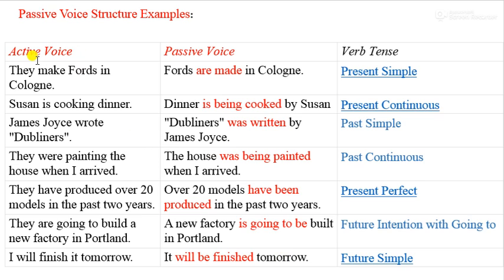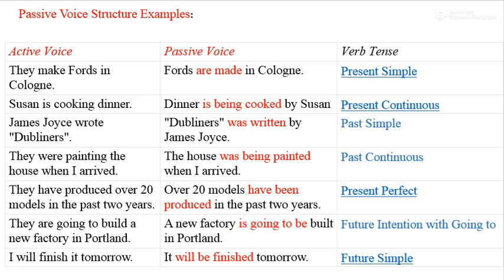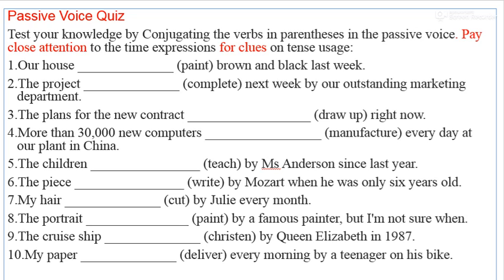In the active voice there is subject, then verb, then object. In passive voice the object comes first, then the verb form. The key point of passive voice is to place focus on the object rather than the subject — what was done to something, or focusing on the person or thing affected by an action.